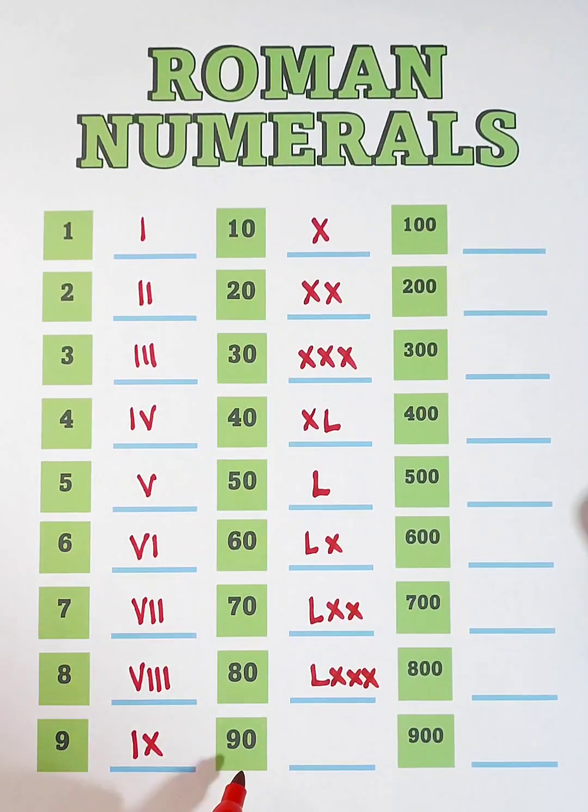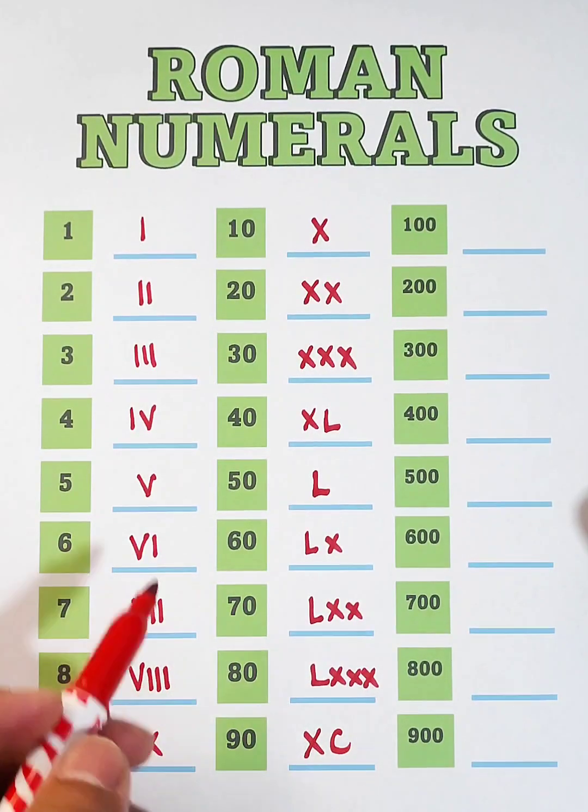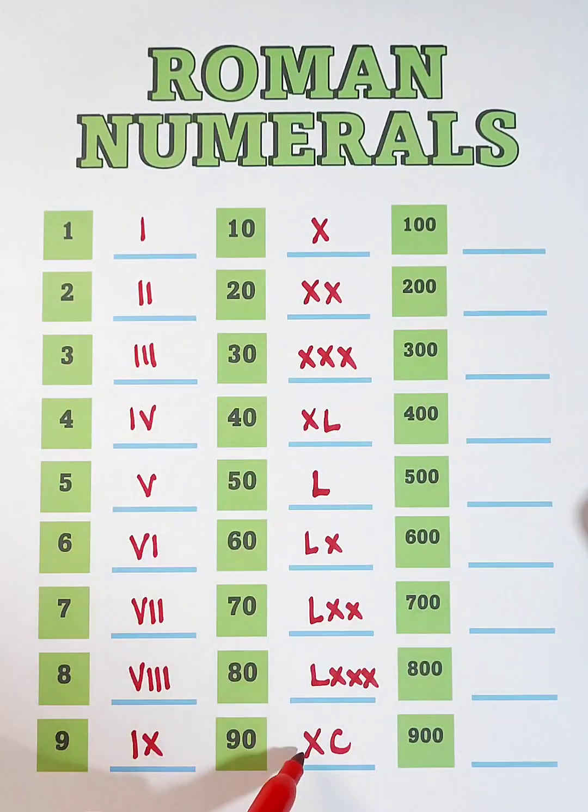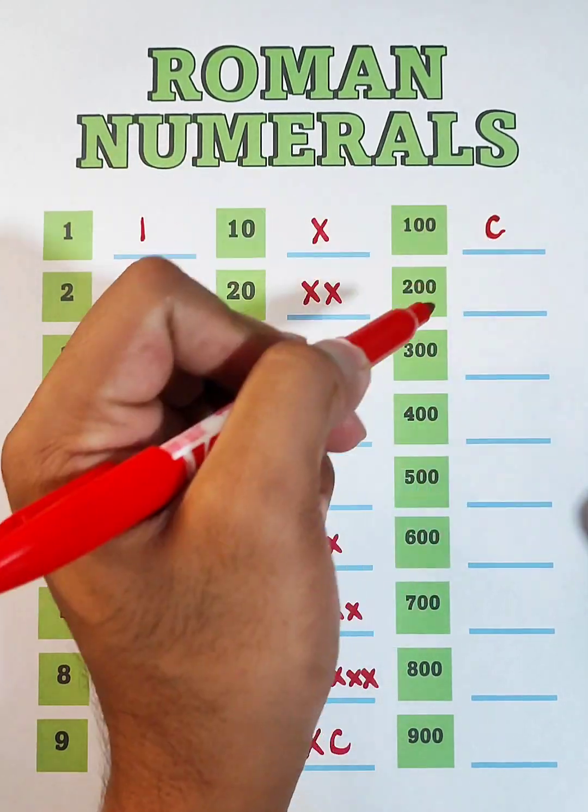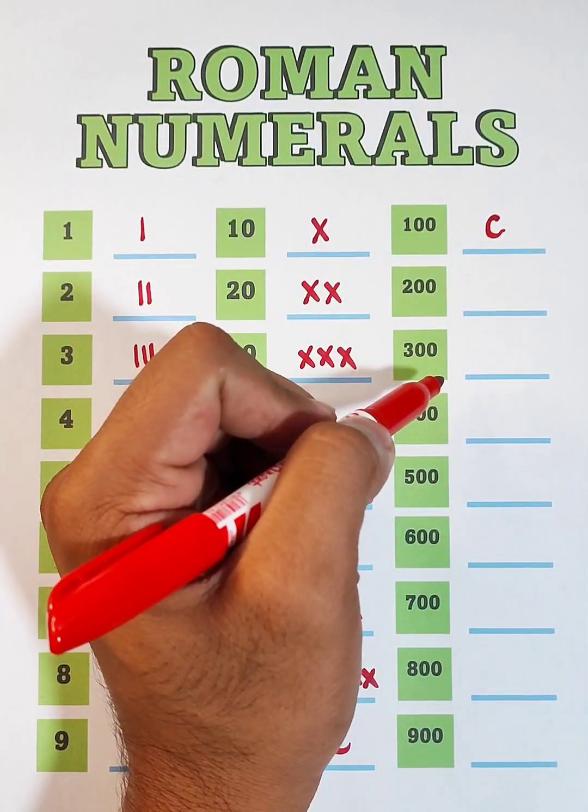And for 90, this will be represented by X and C. Because this is 10 before 100. So, let's go with 100. If this is XC, therefore, 100 is represented by letter C.